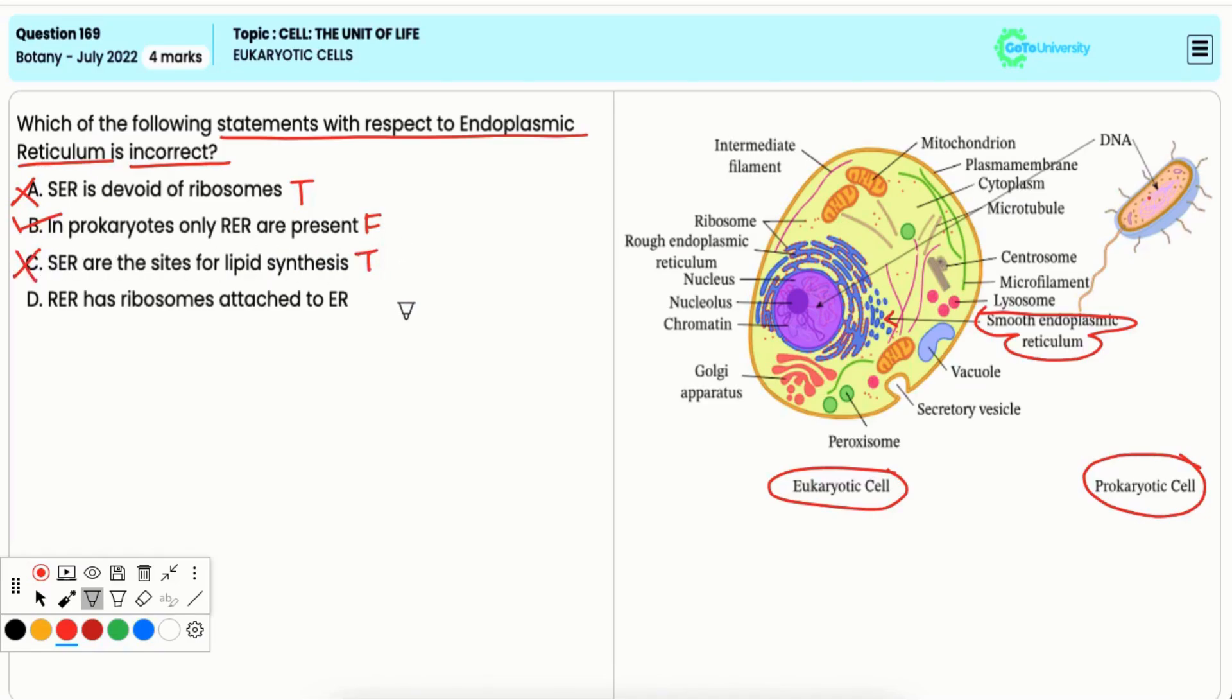Option D: RER has ribosomes attached to ER. RER has ribosomes attached to its surface, which are involved in protein synthesis. Thus, this statement is also true. Hence, it is an incorrect option.